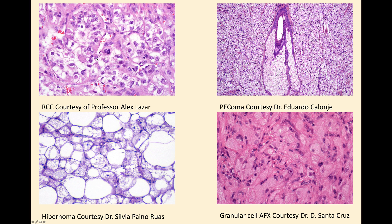PEComa is again a pretty good differential. This case was shared with me by Dr. Eduardo Colongi. At high power you could certainly think of a balloon-cell melanocytic lesion. But immunohistochemistry would be helpful: PEComa is characterized by smooth muscle differentiation and melanocytic differentiation, so smooth muscle actin, Desmin, S100 protein, Melan-A, and so on would make the diagnosis fairly readily.